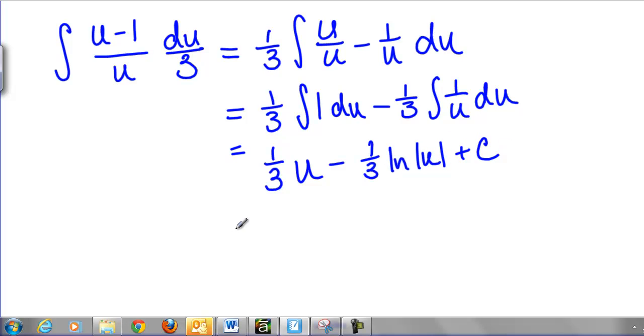And then our last step is to go back to x's, so we use our u equals x cubed plus 1 to get 1/3 times x cubed plus 1, make sure you put it in parenthesis, minus 1/3 natural log of the absolute value of x cubed plus 1 plus c. And that's our final answer.